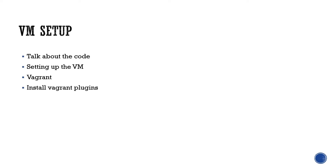We also need to install two plugins: the first is host-manager and the second is vb-guest. Host-manager is important — without it your VM can cause issues. vb-guest is needed if the VM has issues. I'll give commands for both. Then we'll test the setup by pinging from one machine to another to verify connectivity between the app VM, Memcache VM, DB VM, and RabbitMQ VM.